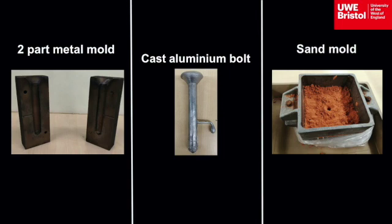While in a molten state, some aluminium bolts have been cast in moulds. The conditions of the moulds determine the type of grain structure that is formed. Both a steel two-part mould and a two-part sand mould have been utilised to manufacture the bolts.